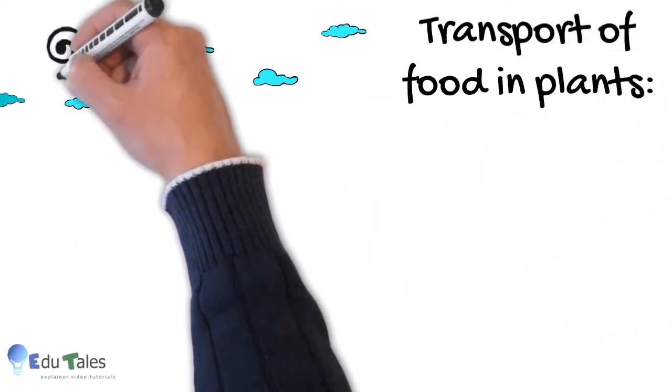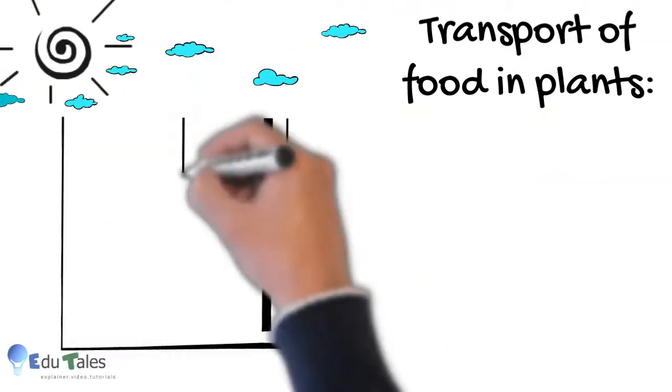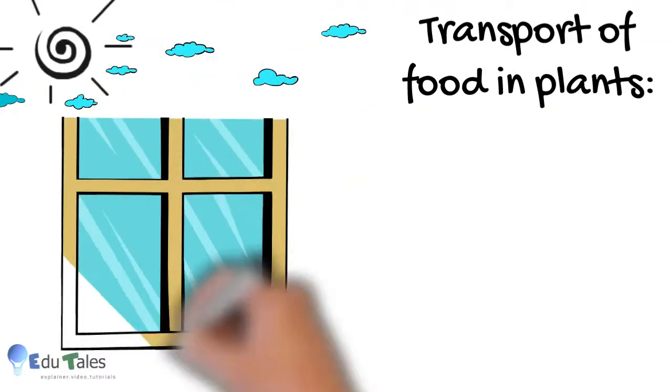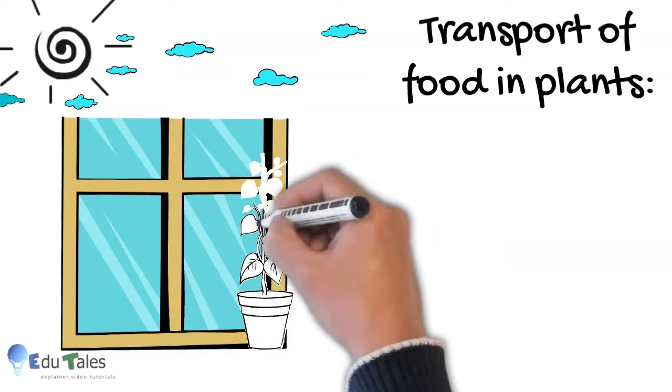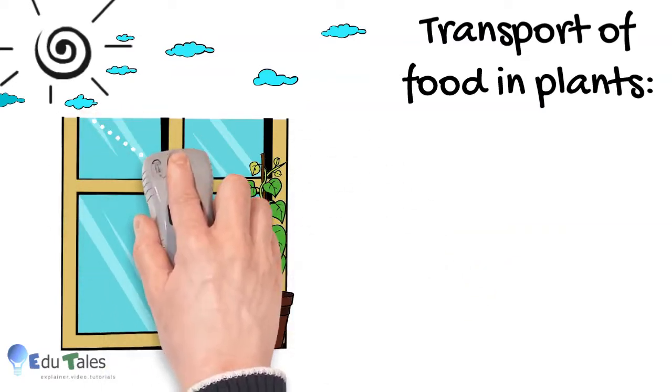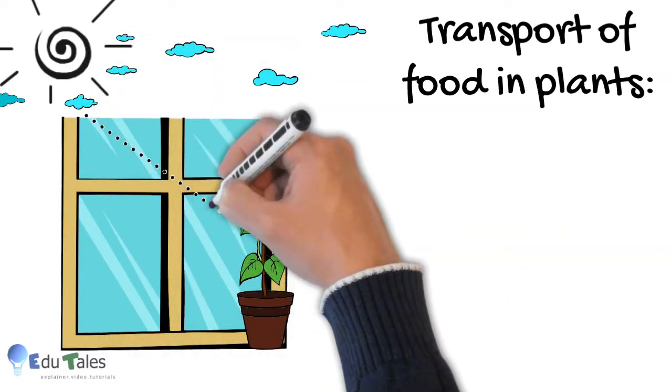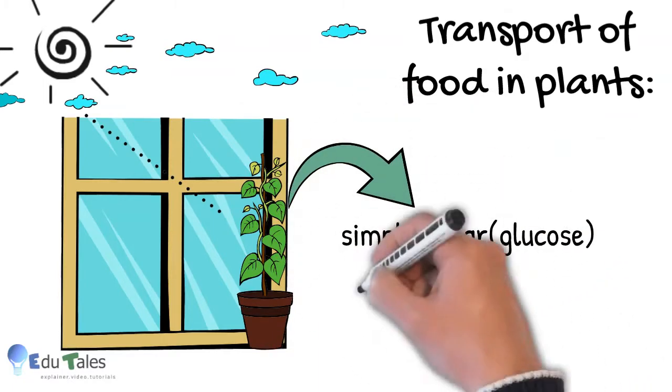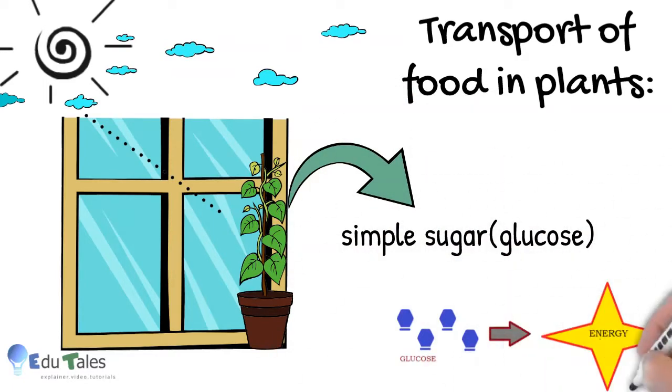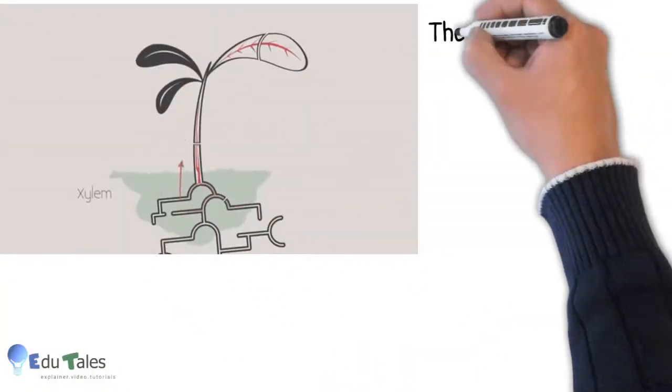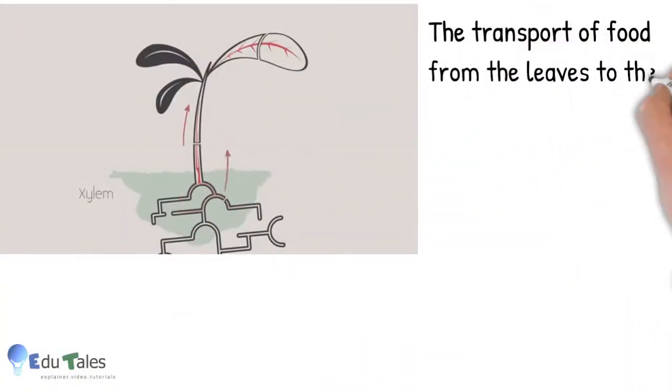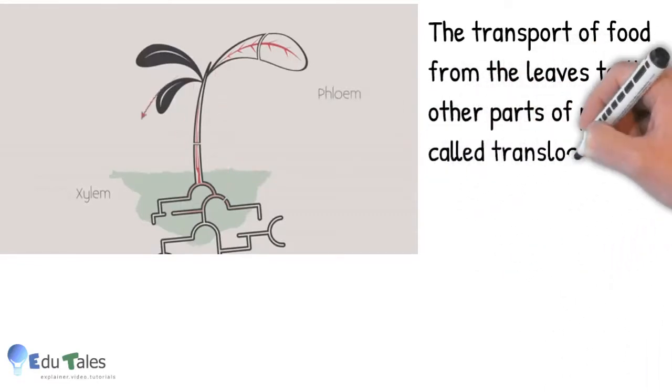The food made by the leaves through photosynthesis is in the form of simple sugar, that is glucose or sucrose. We know that glucose will provide energy. This food needs to be transported to various parts of plants such as branches, stem, roots, etc. This transport of food from the leaves to other parts of the plant is called translocation.